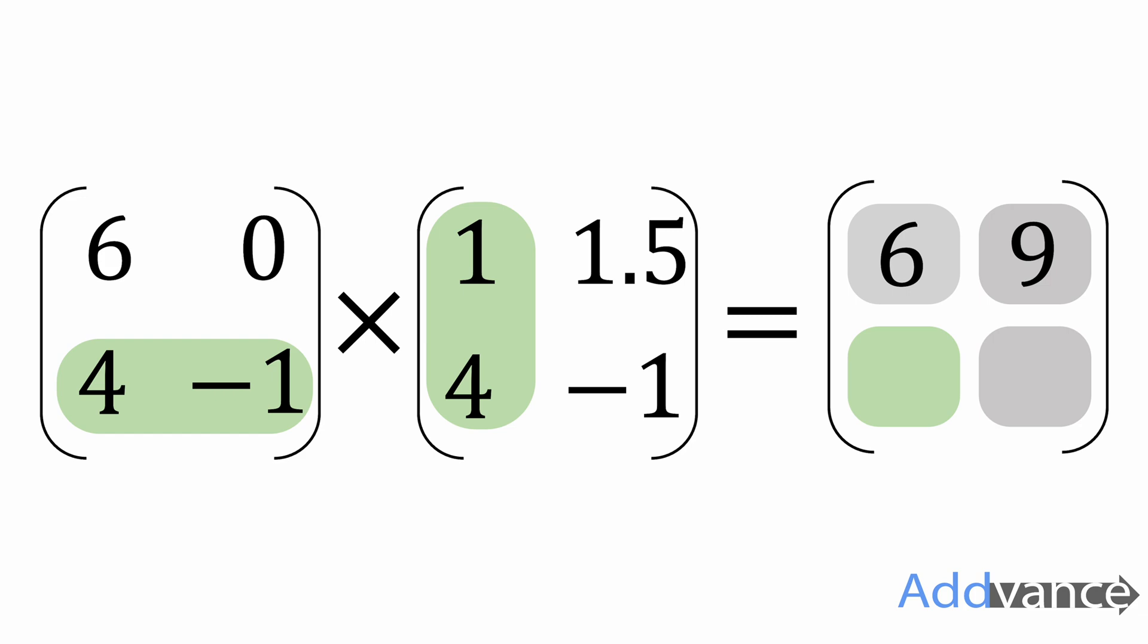To find the bottom left number, that's in the first column and the bottom row. I'm going to multiply the bottom row by the first column. 1 times 4 plus minus 1 times 4 gives me 0.